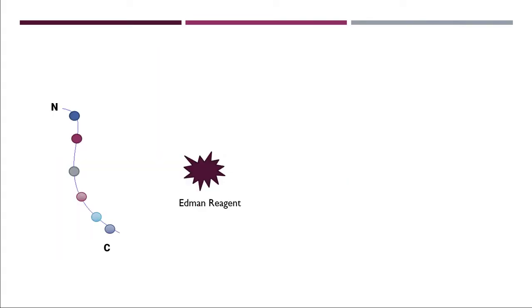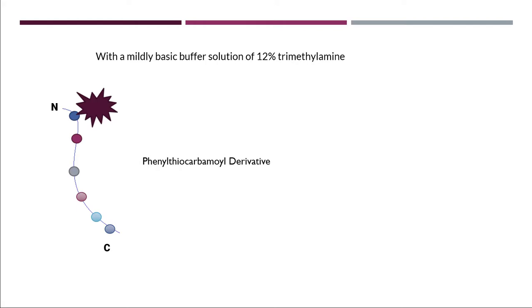Now, what is the function of Edman reagent? Edman reagent in mild alkaline condition attaches itself to the amino acid present on the N-terminal of the polypeptide chain and makes a compound called phenylthiocarbamyl derivative.